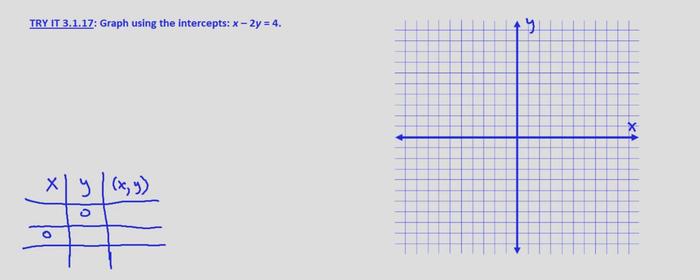So we'll start off looking for the x-intercept. Again, that's when y equals 0. So we plug in y equals 0. We get x minus 2 times 0 equals 4. 2 times 0 is just 0, so we end up with x equals 4. So our x-intercept is the point 4, 0.